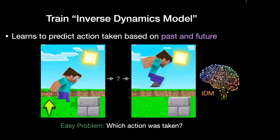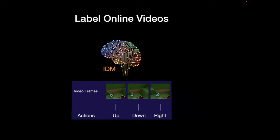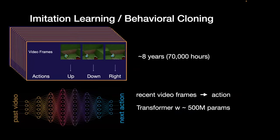We train an inverse dynamics model (IDM): we give it the past and the future of a video, and its job is to predict what action must have been taken at the midpoint. That's not too hard — if you see two frames where the character jumped, you know the player hit the jump button. Once you learn to infer actions using the future, you can label the entire internet with that model, and then do behavioral cloning at scale like GPT does for text, but now for video.